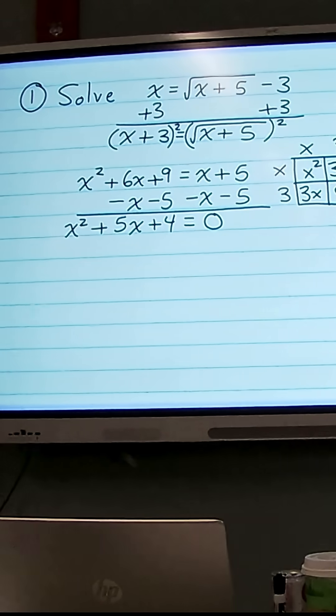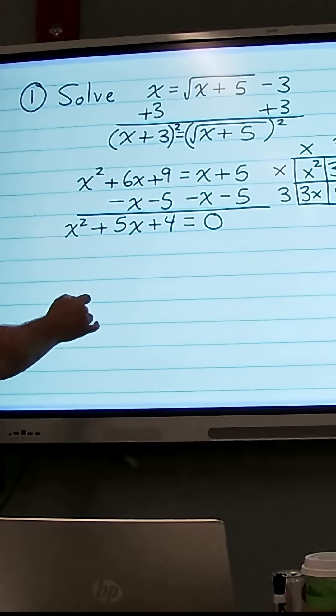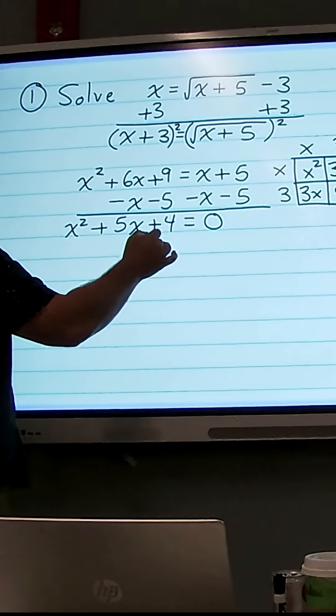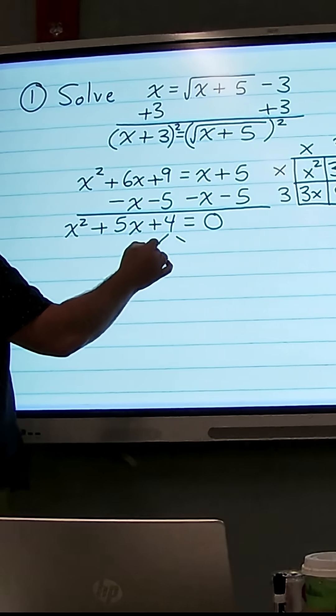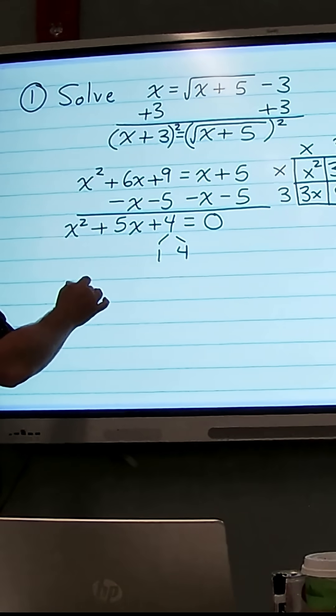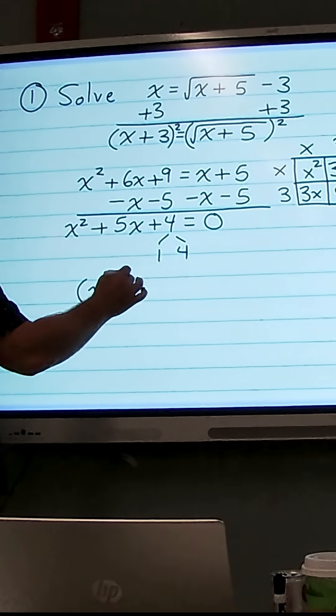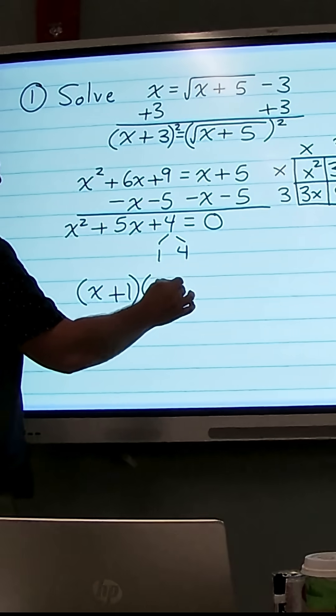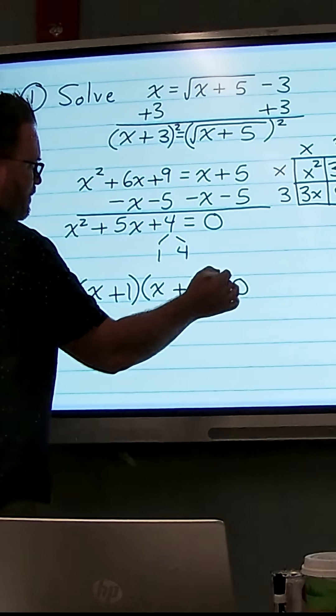This is factorable, so we can factor this when a equals 1 by listing out the factors of 4 that add to 5. So those are 1 and 4. So I can write this in factored form as x plus 1 times x plus 4, and that equals 0.